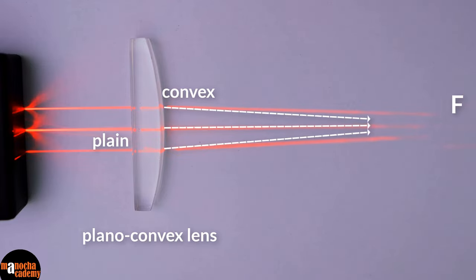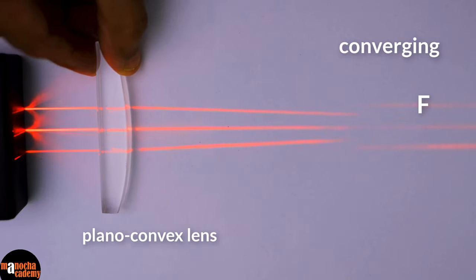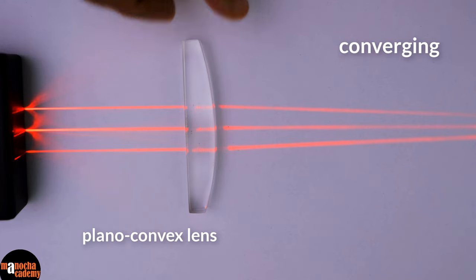As you can see, it is converging the light rays. So a Plano-Convex lens has a converging action like a convex lens. Because half side of it is convex in nature.